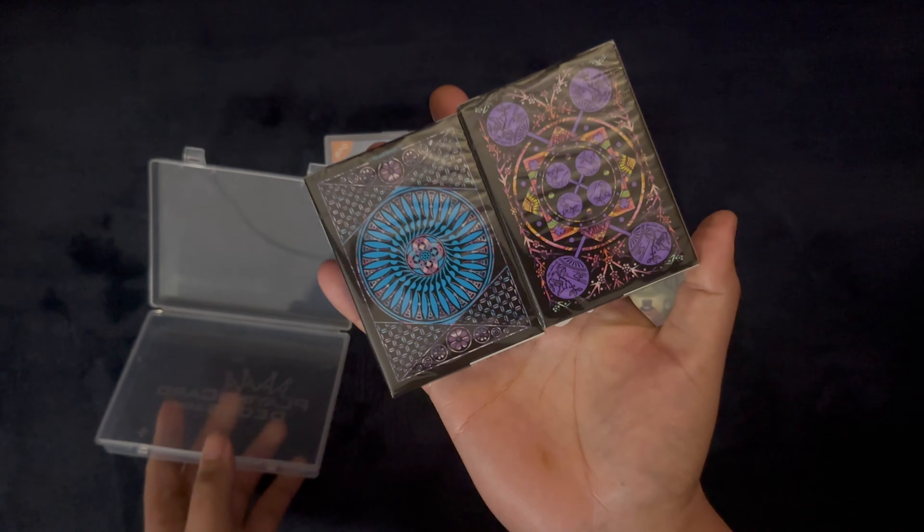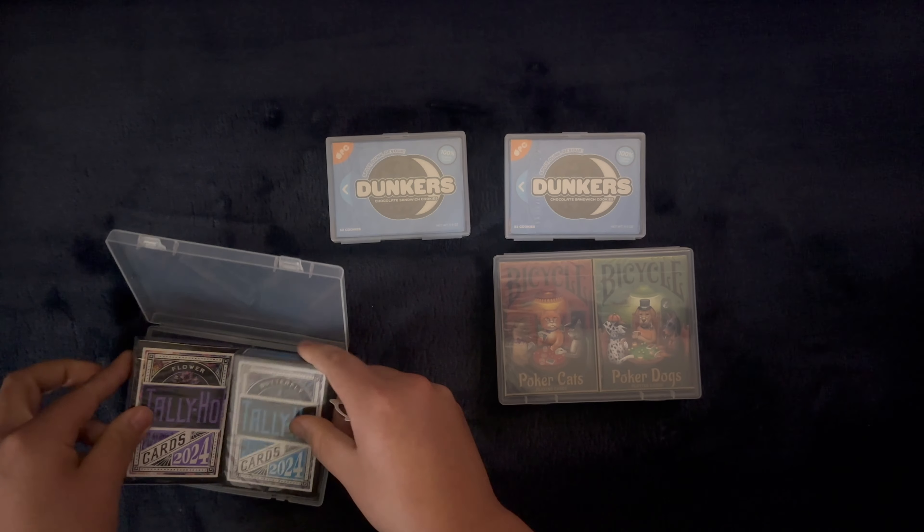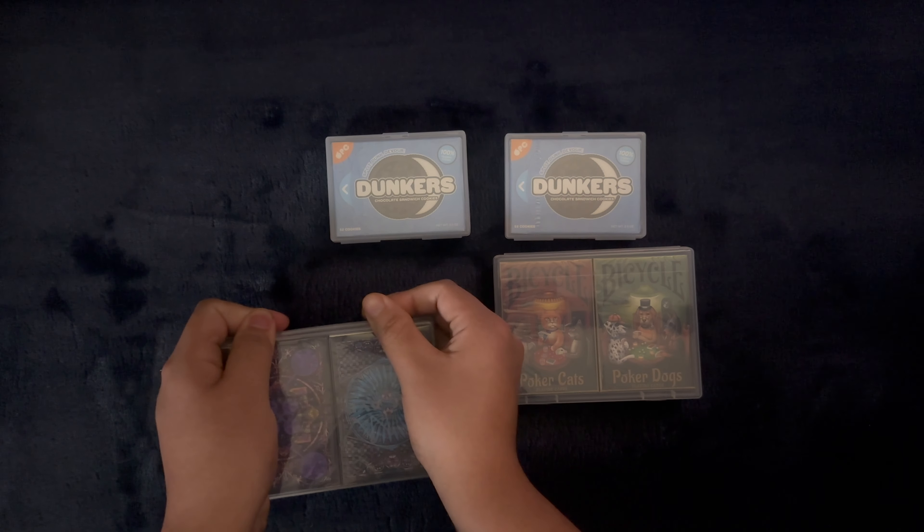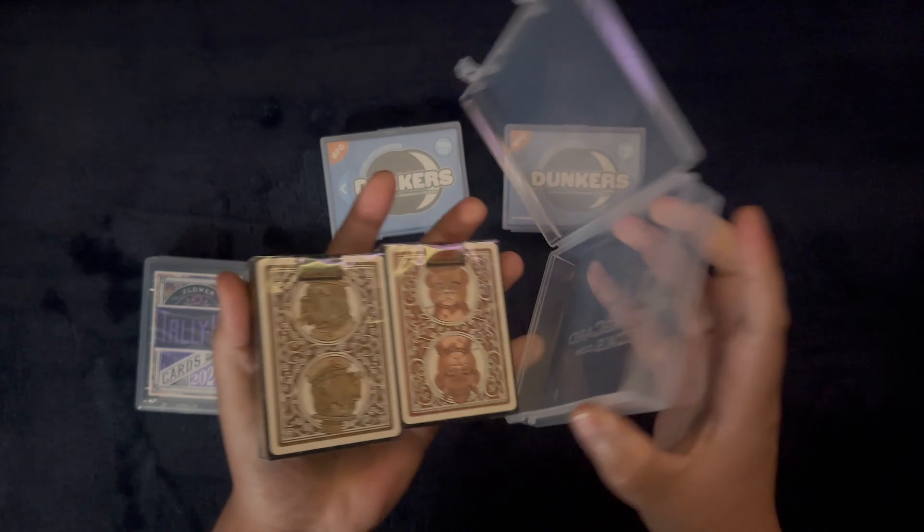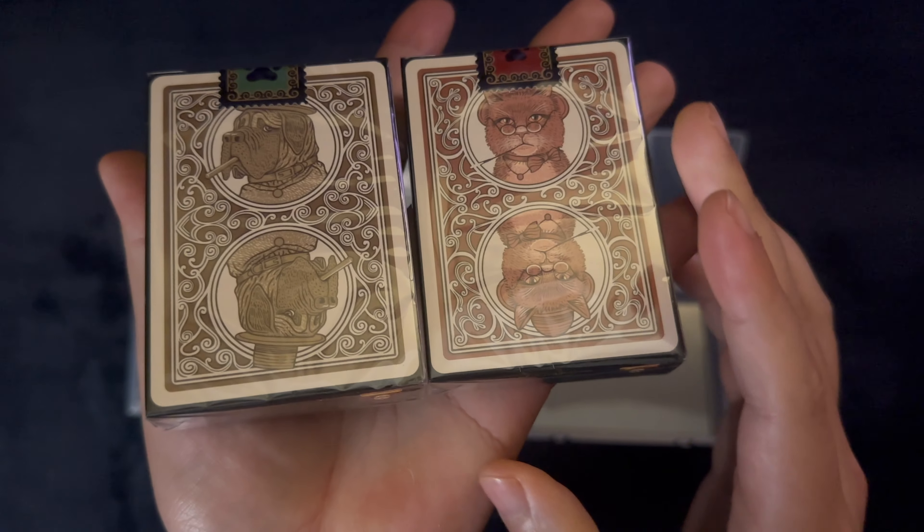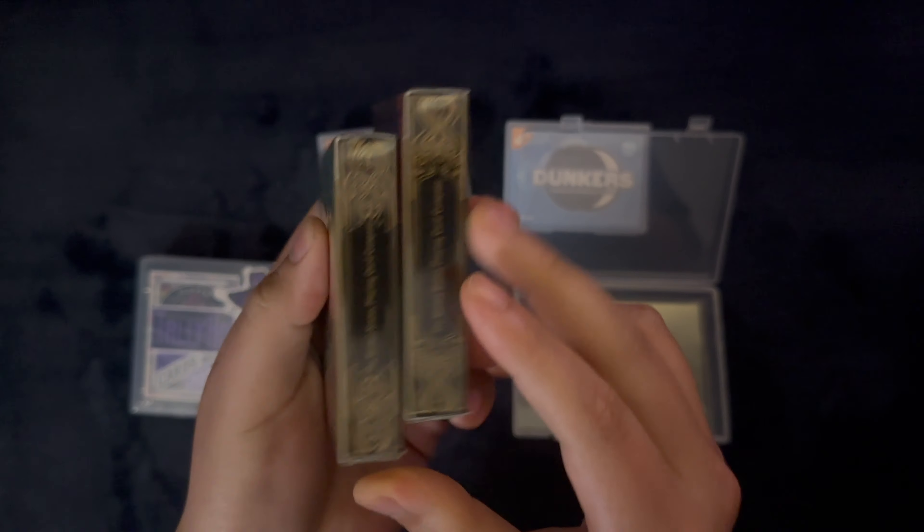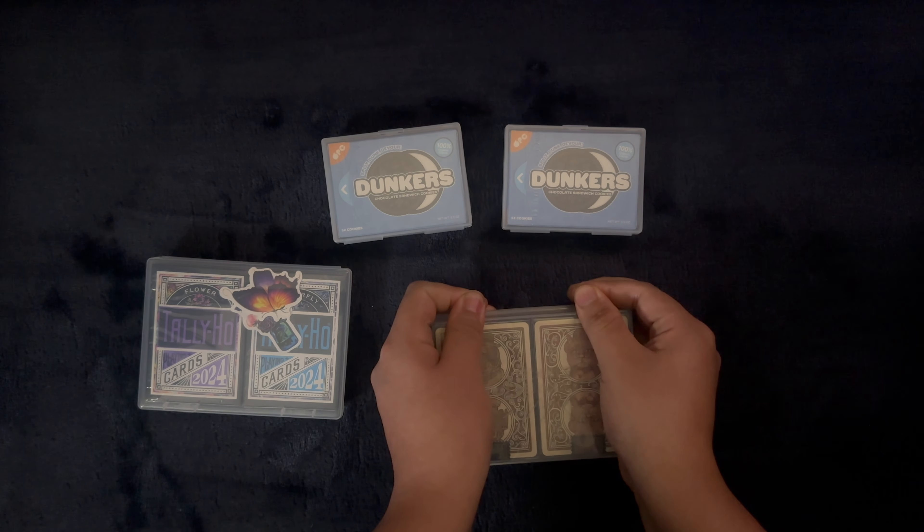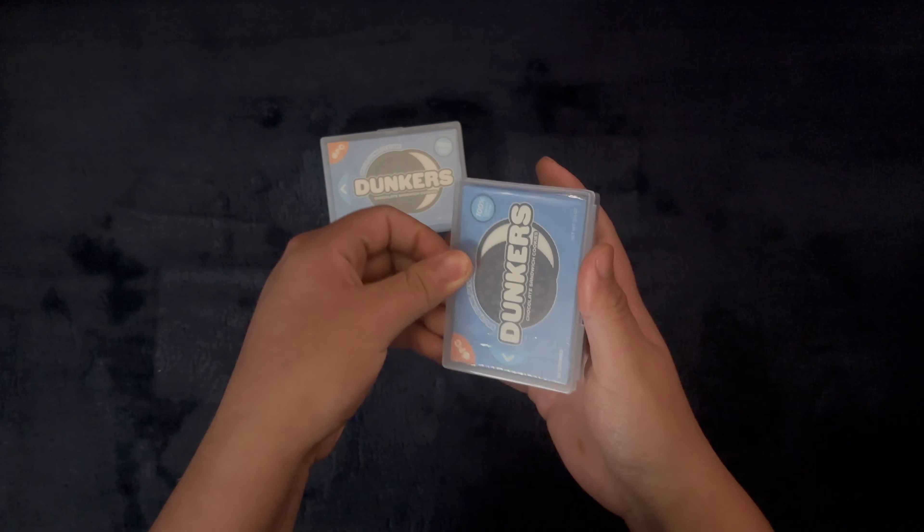As soon as I saw these I knew I wanted them. Just look at those lovely colors and designs. So the deck that would be given away will be a Dunkers deck, just in case you're wondering. And we also have some poker dogs and poker cats. I'm pretty sure that these are the second version. So let's open up the decks at hand and get into our night of some solitaire.